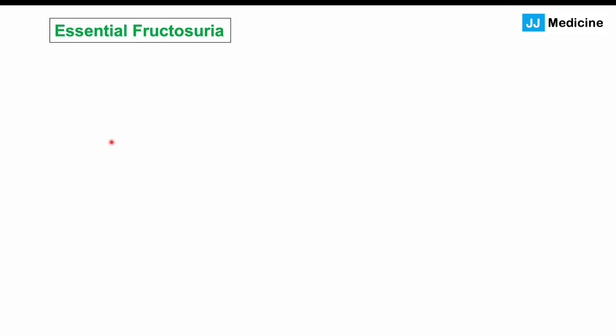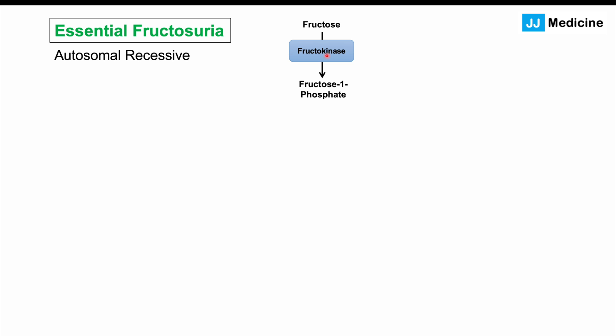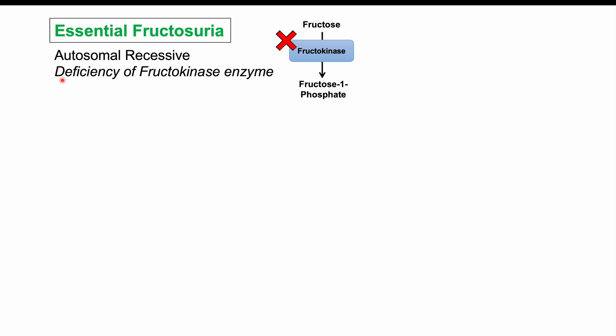Essential fructosuria is due to issues with the fructokinase enzyme. It is an autosomal recessive condition, meaning we need two copies of the mutated allele to have issues with this enzyme. If there's only one copy, we can still make functional fructokinase. We need one problematic allele from each parent to have this condition, which involves a deficiency of the fructokinase enzyme — so we don't have enough production of fructokinase.